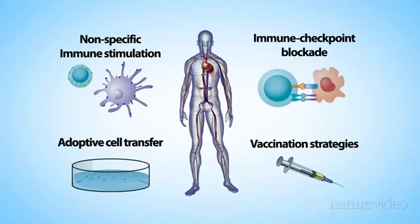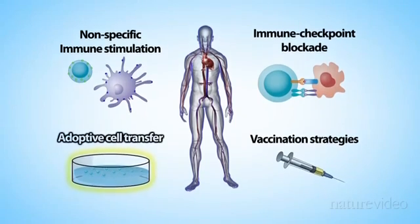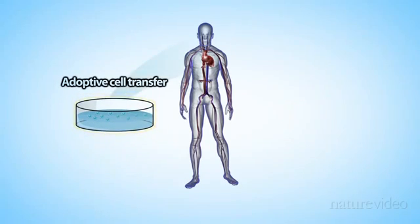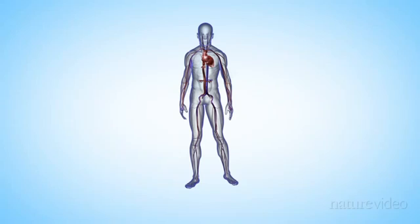Activating immune cells inside the body can be difficult, but the next strategy, adoptive cell transfer, combats this by extracting the immune cells from the patient and activating them outside the body. It enables researchers to specifically target the cancer tissue.